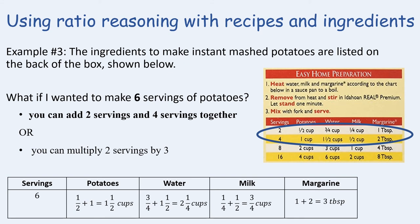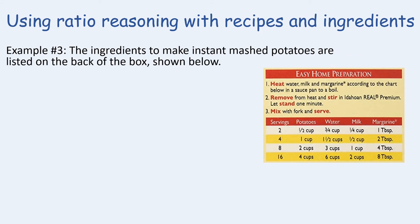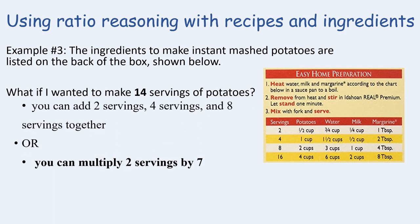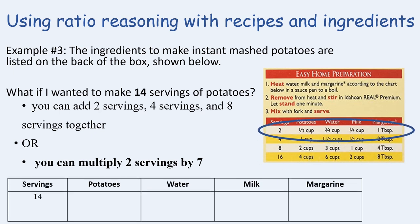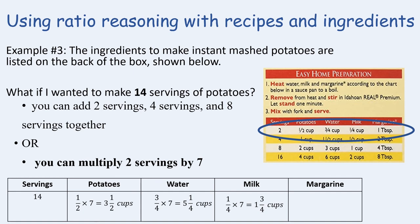For our final example, we use the same mashed potato box to find 14 servings. This time we multiply two servings by seven. For potatoes: a half cup times seven equals three and a half cups. For water: three-quarters times seven equals five and a quarter cups. For milk: one-quarter times seven equals one and three-fourths cups. For margarine: one tablespoon times seven equals seven tablespoons. You can either add or multiply to get equivalent ratios — it's your choice.